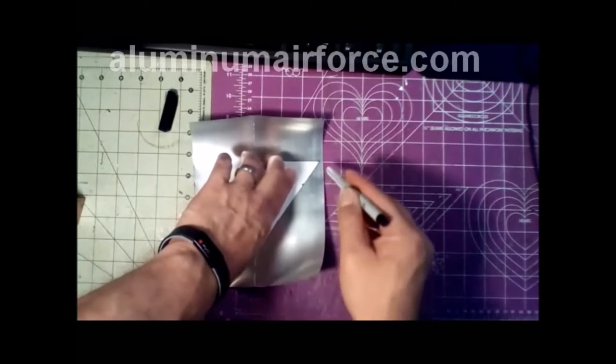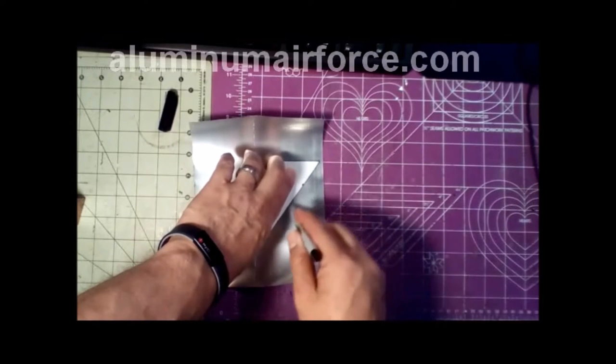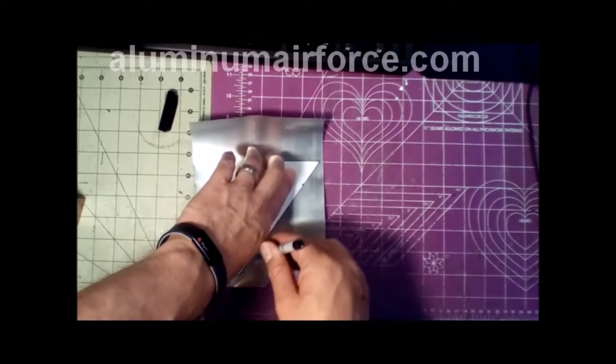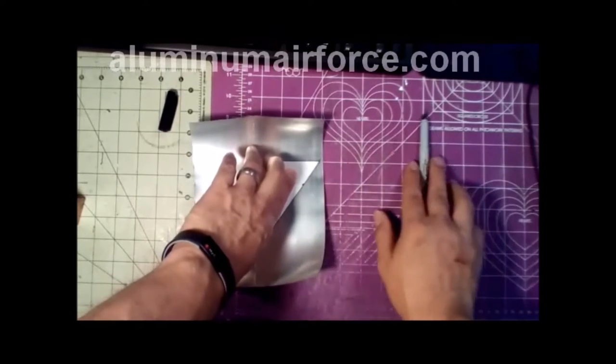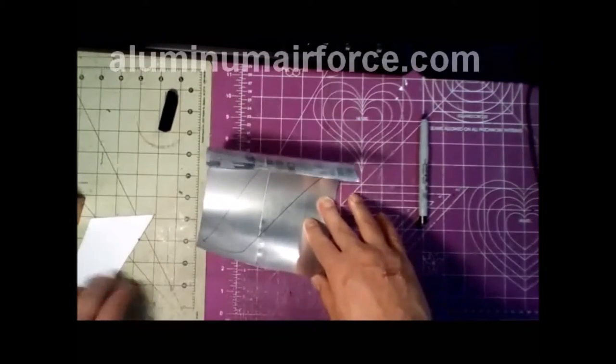Switching hands, a little bit of dexterity required, and we've just about got it done there. There we go. We have now traced our F-86 Sabre template onto our cans. We're ready to move on to making a wing.